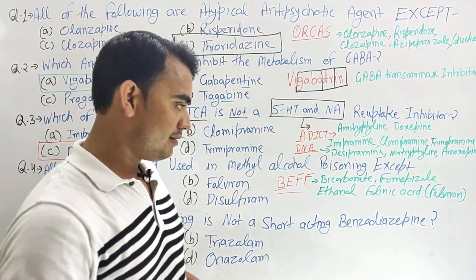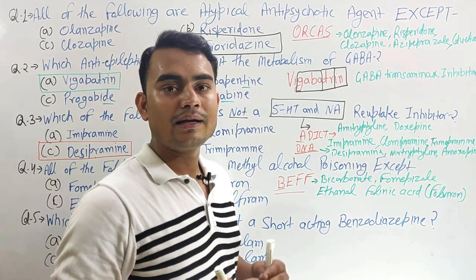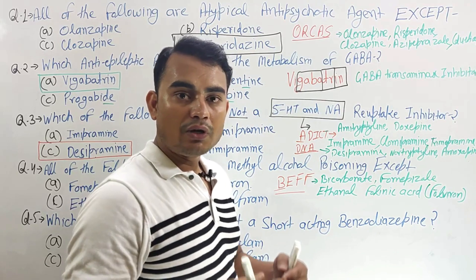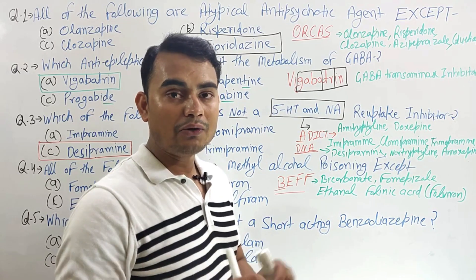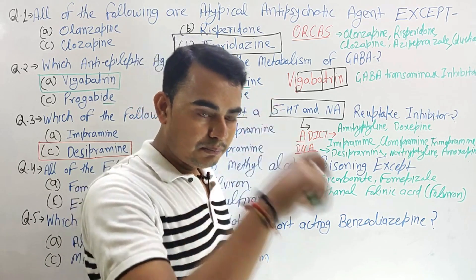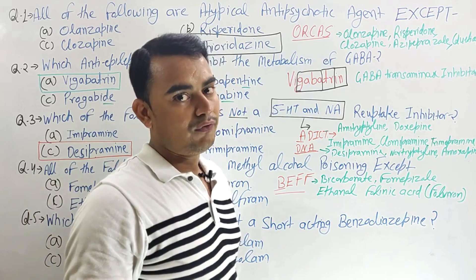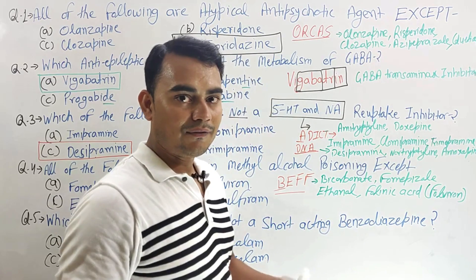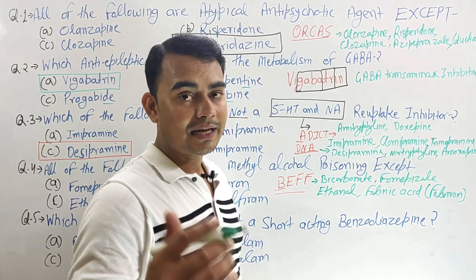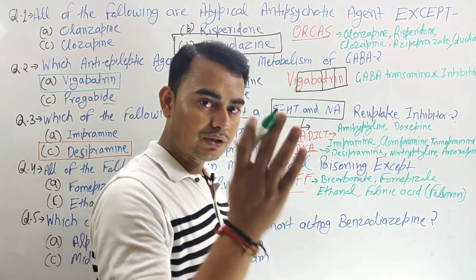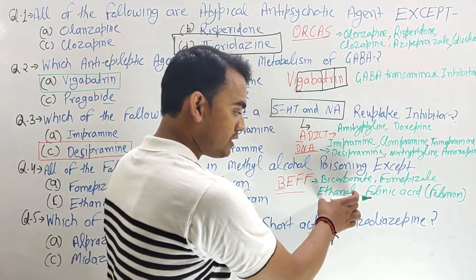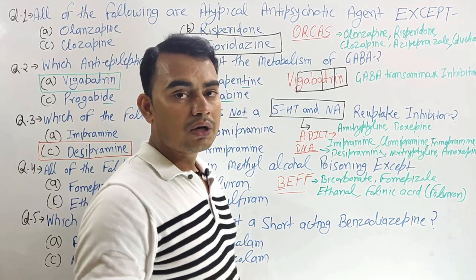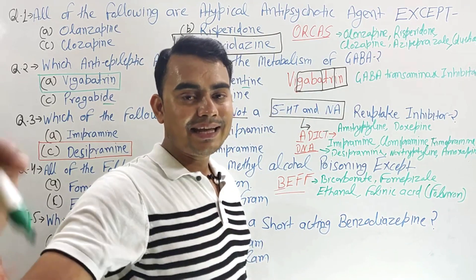The uses: bicarbonate electrolyte dilutes the concentration of methyl alcohol. Fomepizole inhibits alcohol dehydrogenase — by inhibiting it, methyl alcohol is not converted into formaldehyde. Ethanol has higher affinity towards alcohol dehydrogenase, so alcohol dehydrogenase mainly acts on ethanol. While folinic acid or folic acid mainly converts formic acid into carbon dioxide, which is easily excreted out.